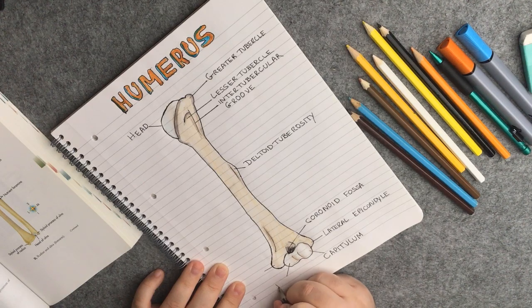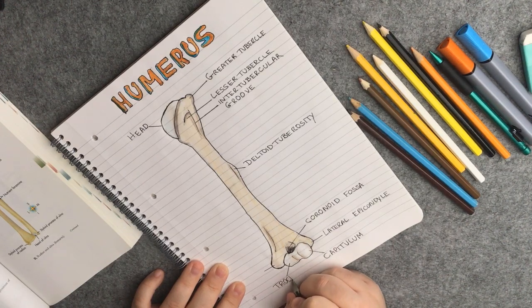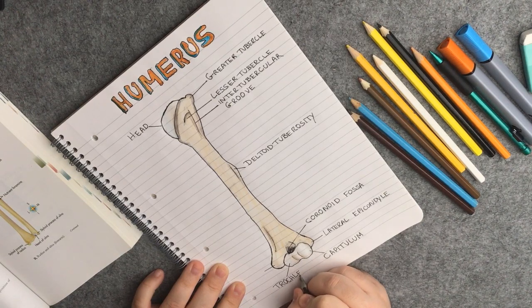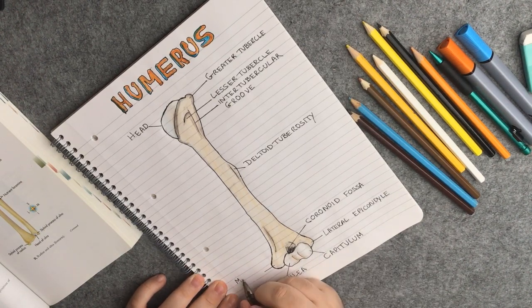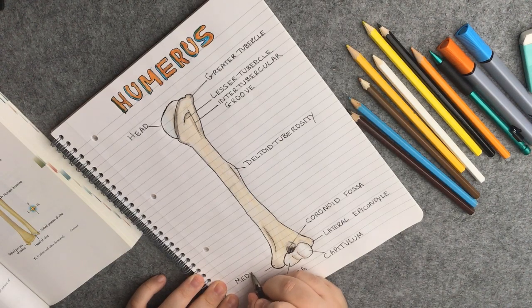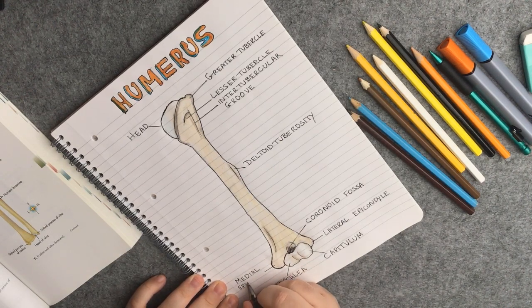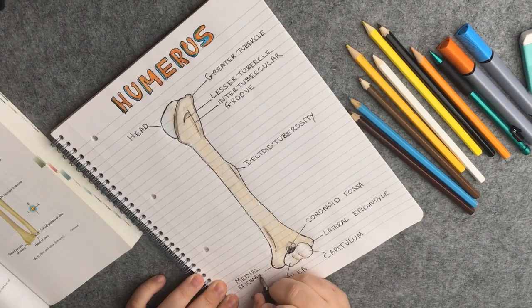Next to the capitulum, we have the trochlea, which articulates with the trochlear notch of the ulna. And the final landmark on my drawing is going to be the medial epicondyle. And note here that it is a bit larger and more prominent than the lateral one.